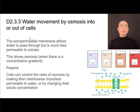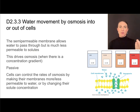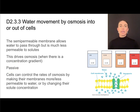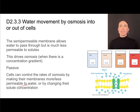Semi-permeable membranes that surround cells allow water to pass through, but are much less permeable to solute — that's why osmosis occurs when there's a concentration gradient and solute cannot pass. Remember that this is passive; no energy is required. Cells can control the rate of osmosis by changing their solute concentration — for example, using contractile vacuoles or salt pumps — or by changing their membrane permeability to water.